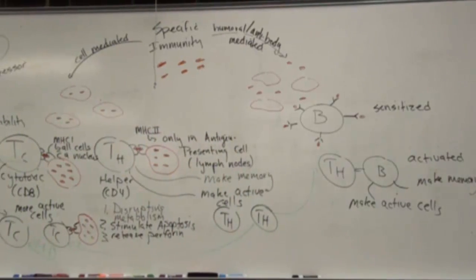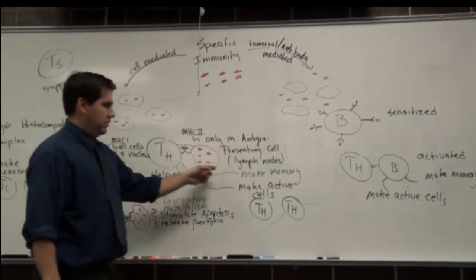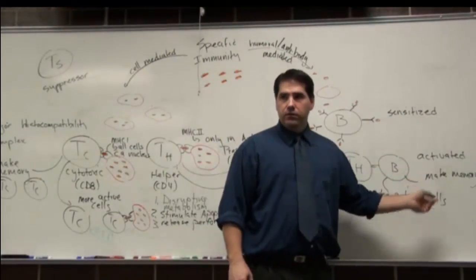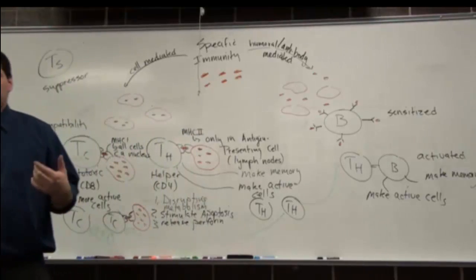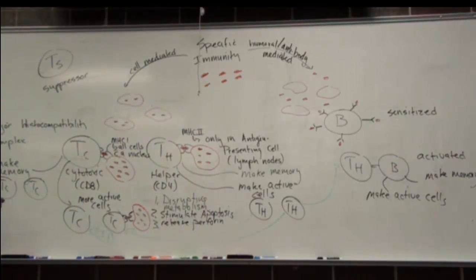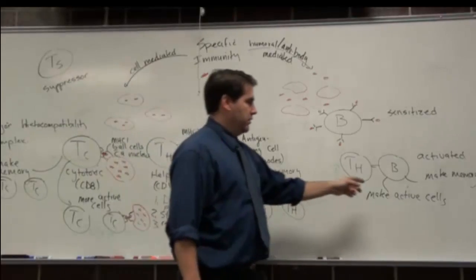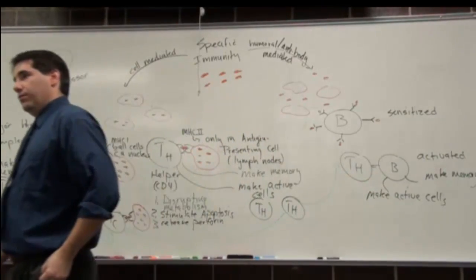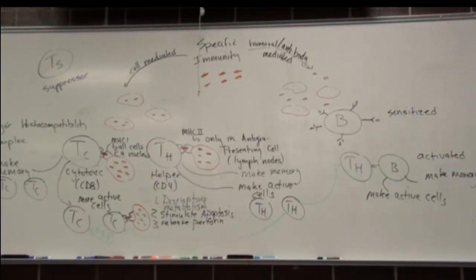The other thing to note is these memory cells, it takes a while to make those. So the first time you get the chicken pox, the chicken pox gets a head start. You're well infected before you've got all this made and so you're going to get the chicken pox. The second time you see it, you've got all these memory cells that are going to get going in two to three days. And in that case, you're going to beat the immune system at what it's about.